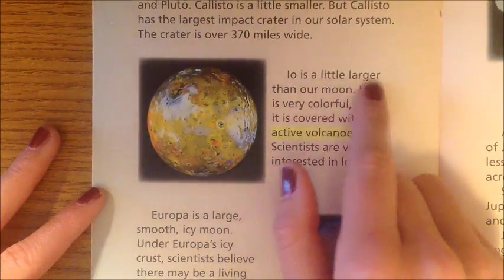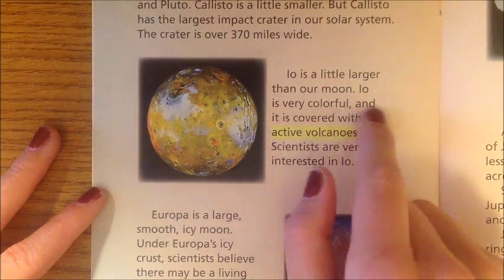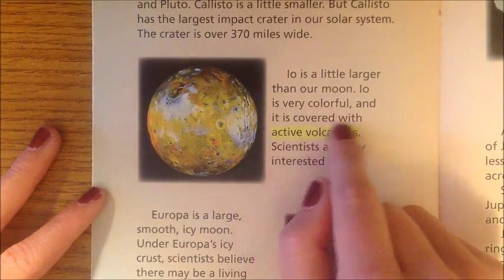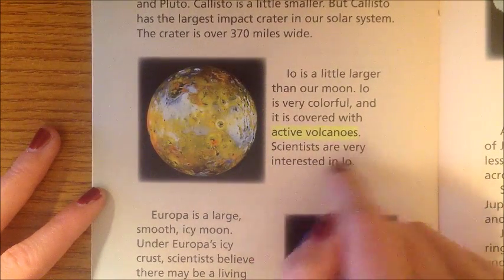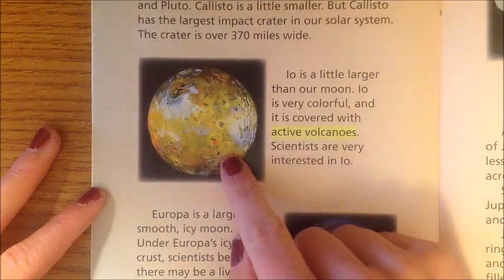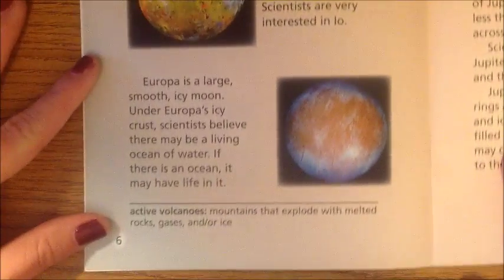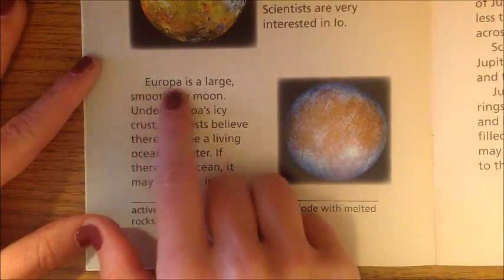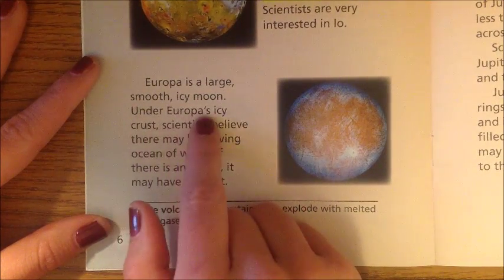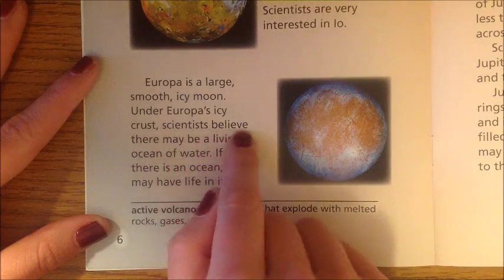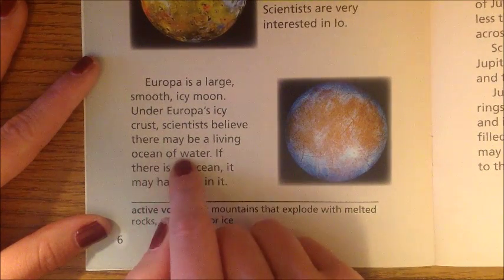Io is a little larger than our moon. Io is very colorful and is covered with active volcanoes. Scientists are very interested in Io. Europa is a large, smooth, icy moon. Under Europa's icy crust, scientists believe there may be a living ocean of water.